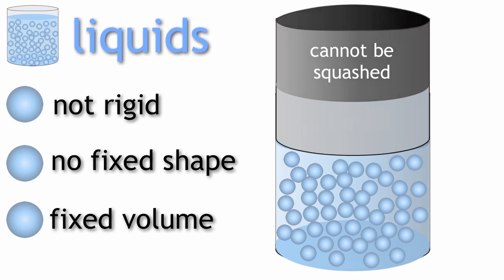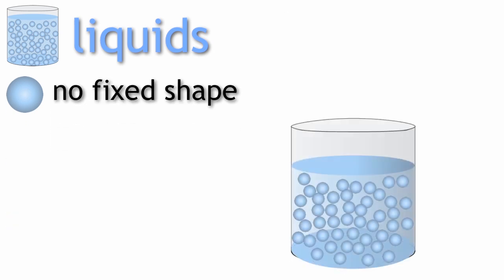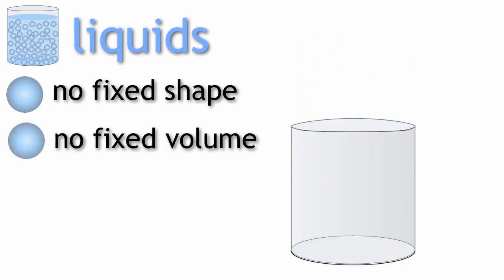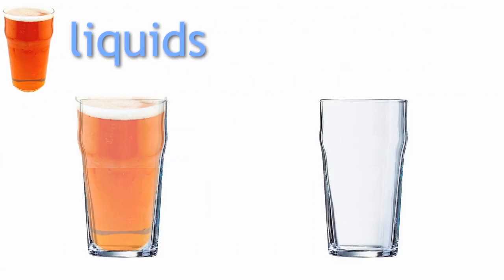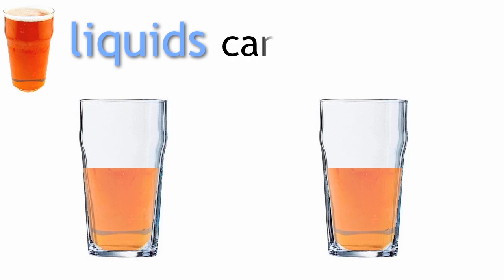Beware with that one, as many students think because liquids do not have a fixed shape, they do not have a fixed volume either. But they are wrong. If someone orders a pint of beer, they cannot make it two pints by pouring it into different containers. As you know, liquids can flow.